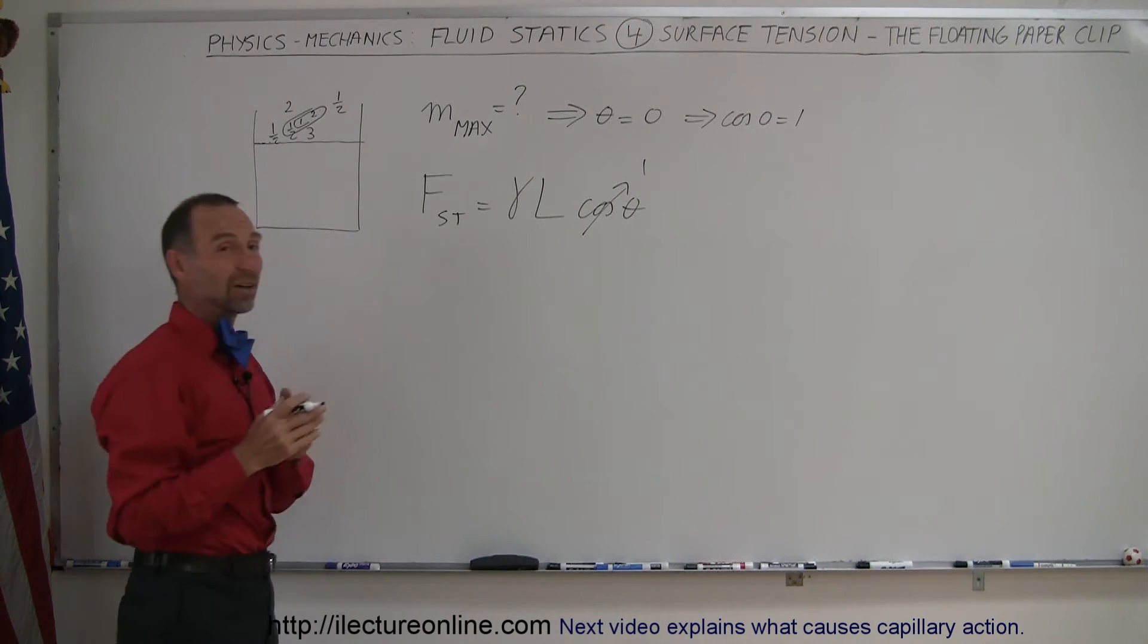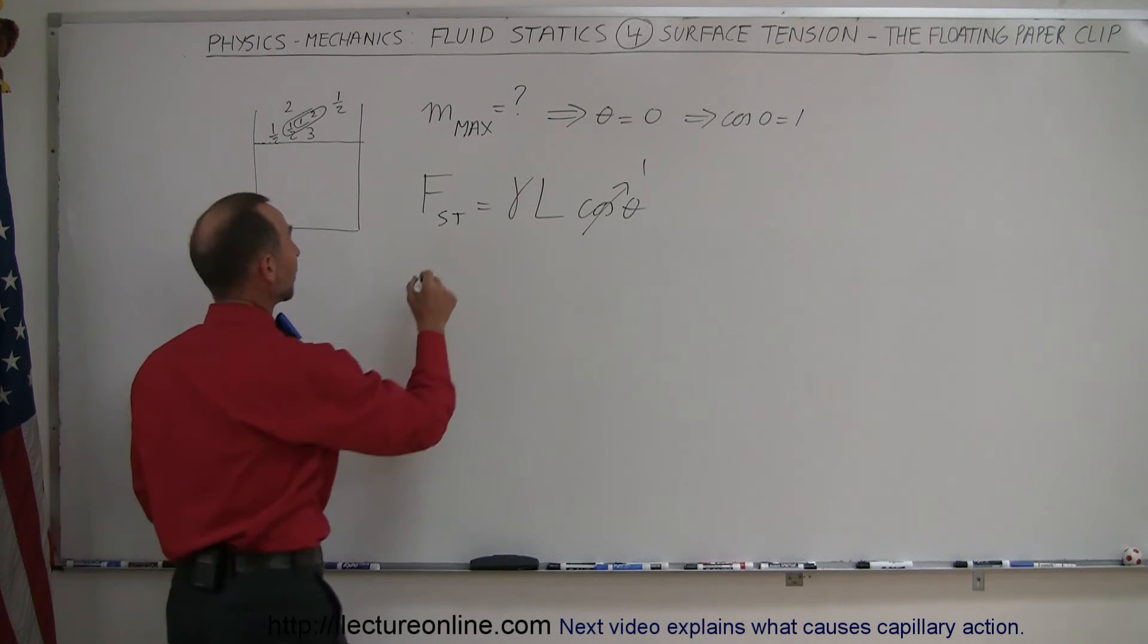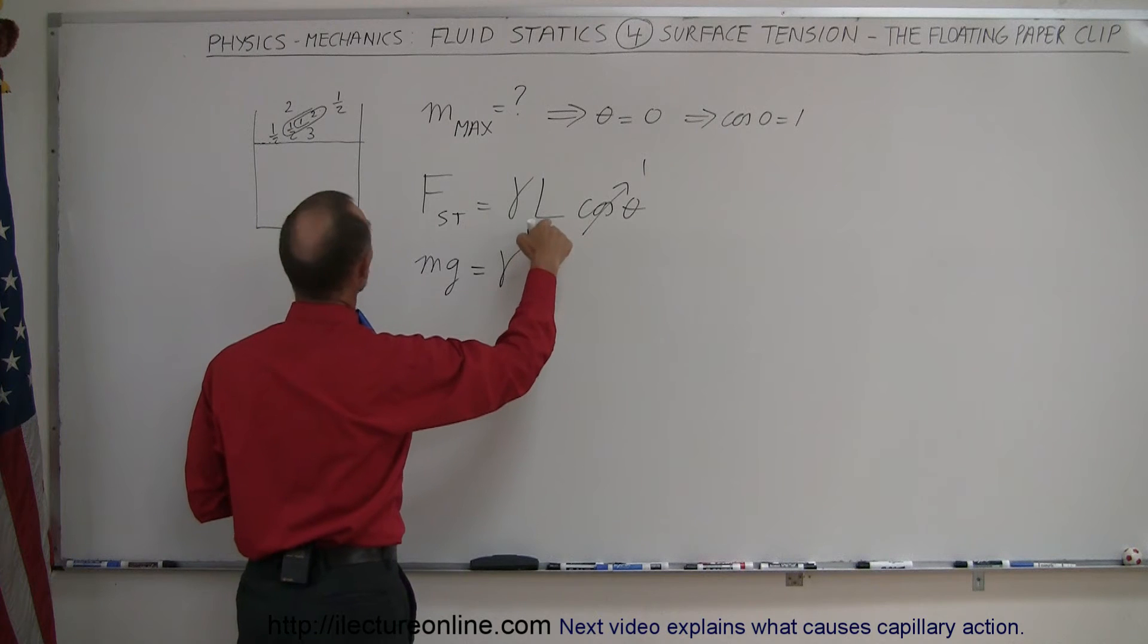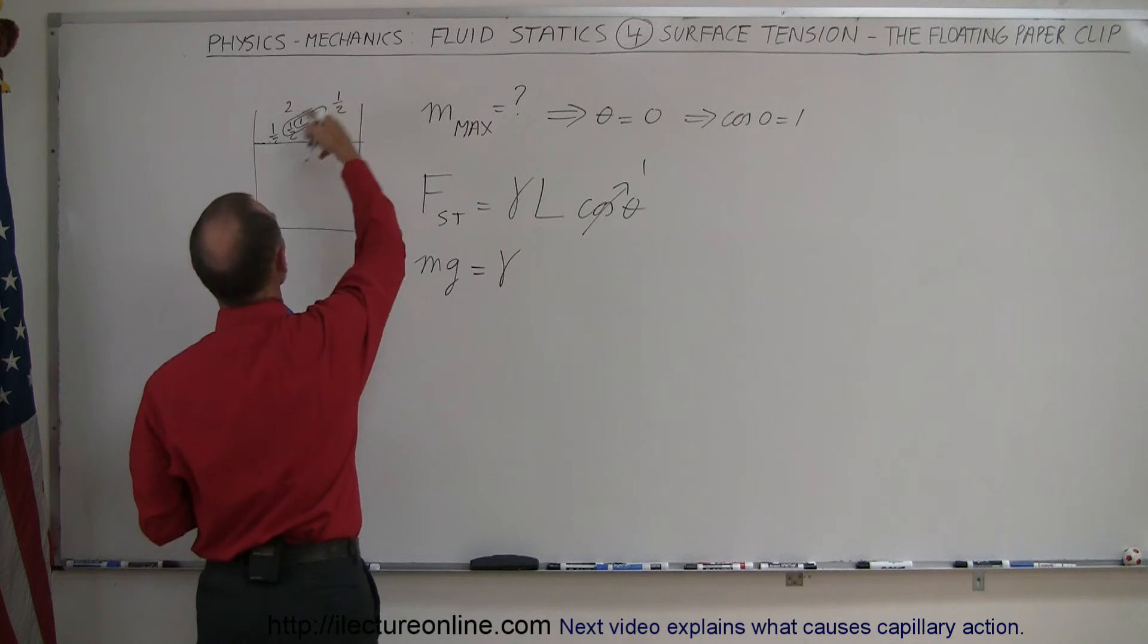The surface tension should be the counterbalance to the weight of the object, so mg is equal to the coefficient surface tension times the length, and the length is going to be the total length of this paper clip.